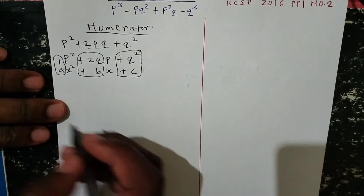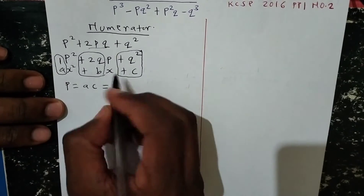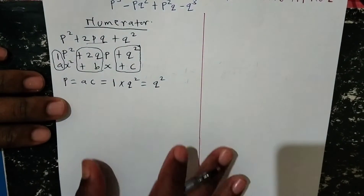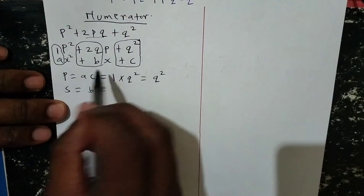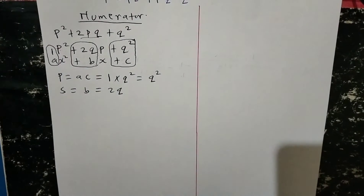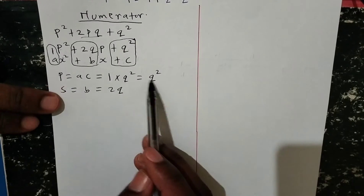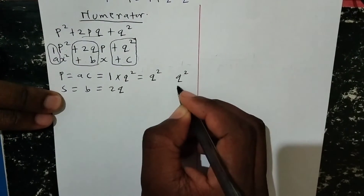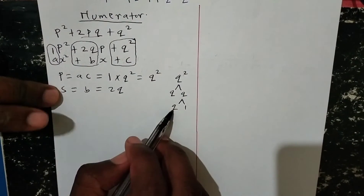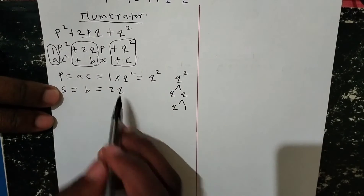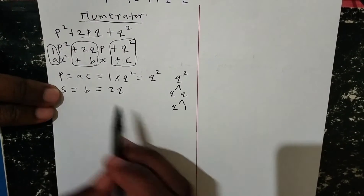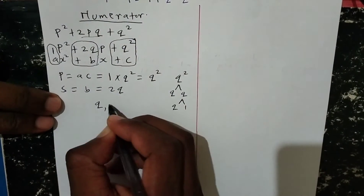We need product and sum. The product is ac, which is 1 times q squared, giving us q squared. The sum is the value of b, which is 2q. To find the factors — two numbers that multiply to q squared and add to 2q — the factors of q squared are q and q, since q times q gives q squared and q plus q gives 2q. Therefore the factors are q and q.